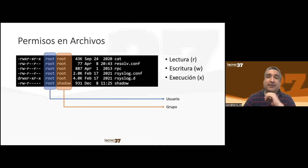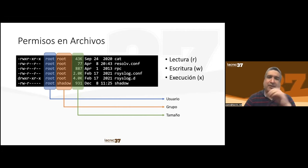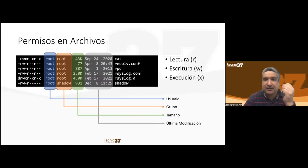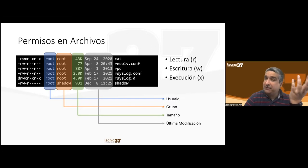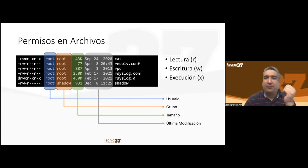All other users are unable to read the shadow file. The next column shows the size of the file in bytes, kilobytes, or megabytes. And the final column shows the date of last modification.